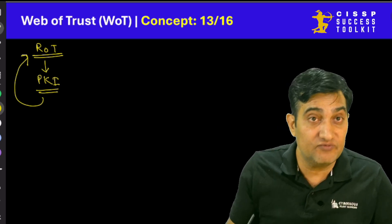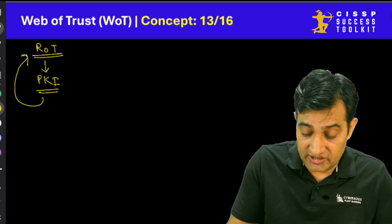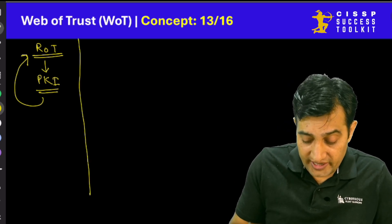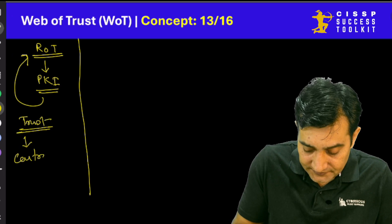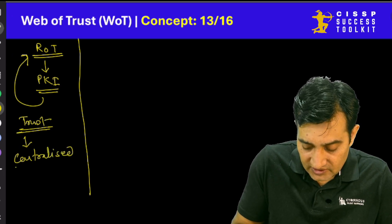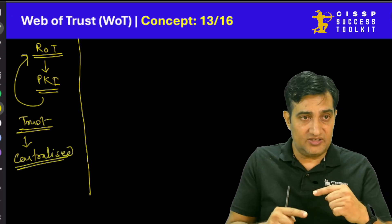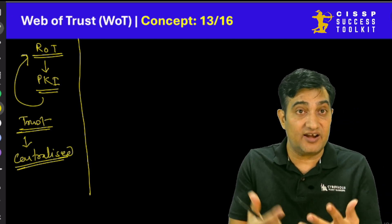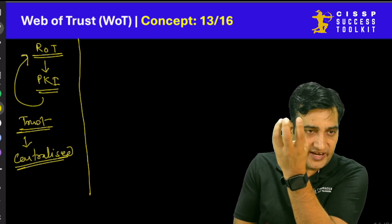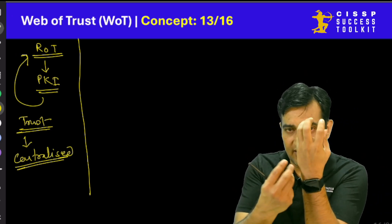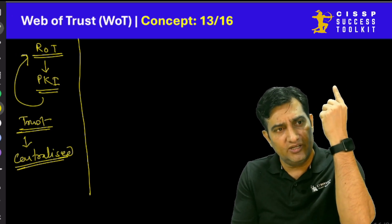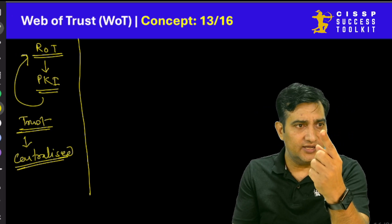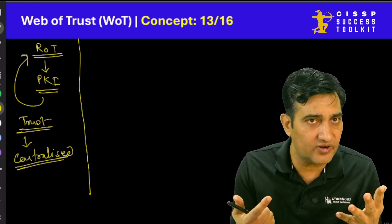Don't ever get confused in the exam. Root of trust or PKI is one model where the trust is established in a centralized way. In PKI, the trust is centralized with the root CA. I will not believe you, you will not believe me, but everybody will believe the certificate authority. That is what is called root of trust.